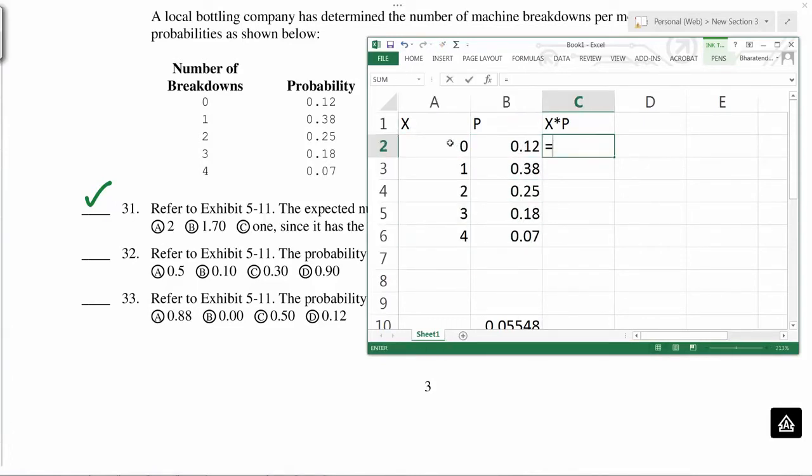So this equals x times p. So I double click, and then add. I get 1.7.